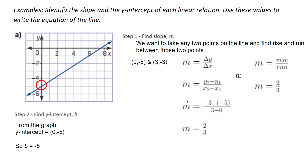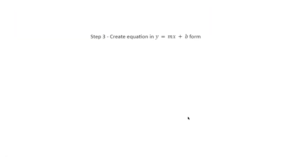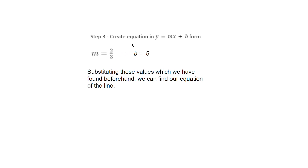Now we want to find the y-intercept, which is b. We find b by looking at the graph — our y-intercept is at the point (0, -5), so b is negative 5. Now we want to create this equation in y equals mx plus b form. We saw that m was two thirds and b was negative 5. Substituting these values, we get y equals two thirds x plus negative 5, which gives us y equals two thirds x minus 5.